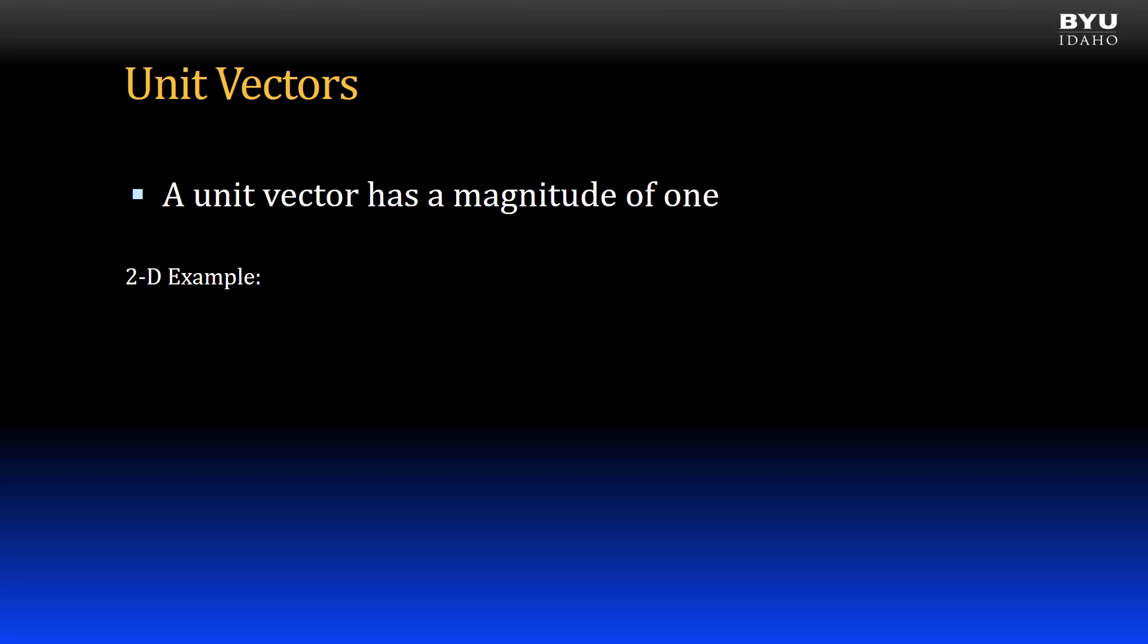Let's look at some examples of unit vectors. Here's a two-dimensional vector with a magnitude of 1 and oriented at an angle theta from the positive x-axis. Because it has a magnitude of 1, it is a unit vector.